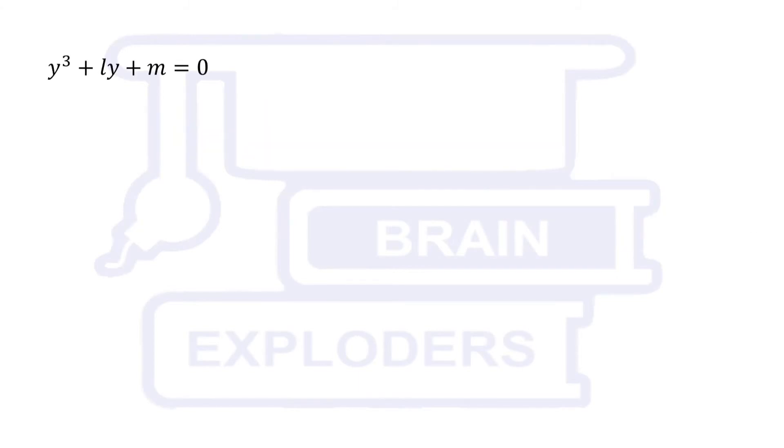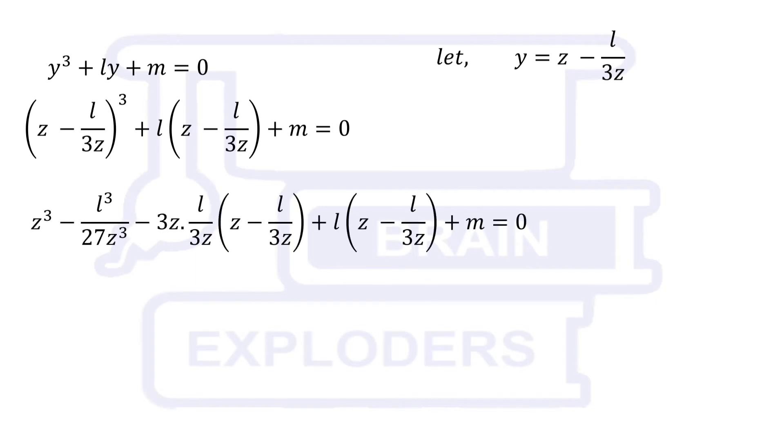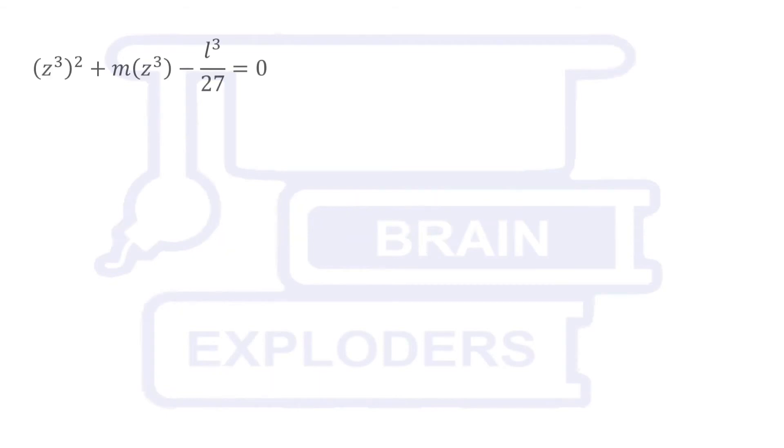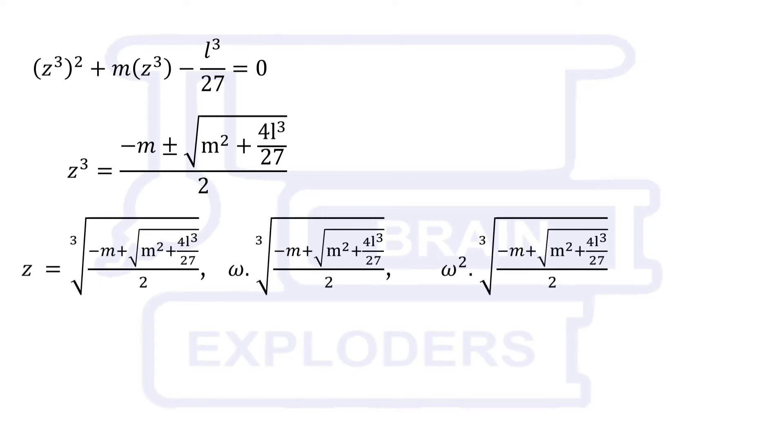Next step is little tricky and is the most important step of this process. Assume y equals to z minus l over 3z where z is an unknown variable. This assumption will give us a quadratic equation in terms of z cube. We have z cube whole square plus m times z cube minus l cubed over 27 equals to 0. This equation gives us z cube equals to minus m plus minus root m squared plus 4l cube over 27 over 2. Therefore, we have three values of z in one, omega, and omega squared ratio.